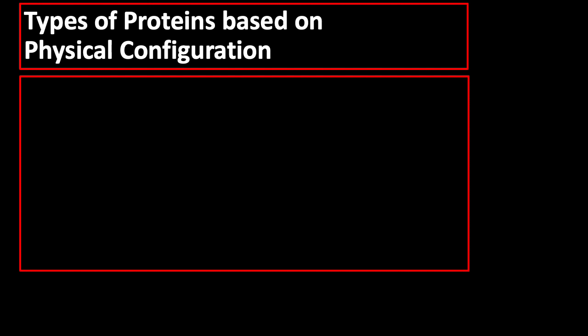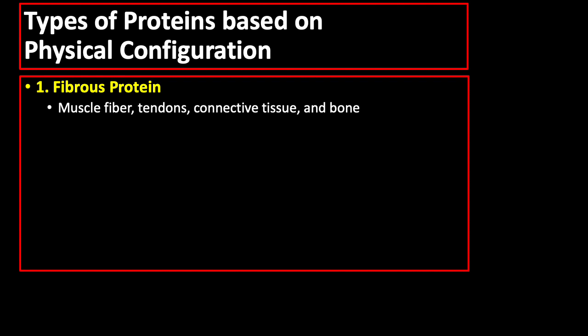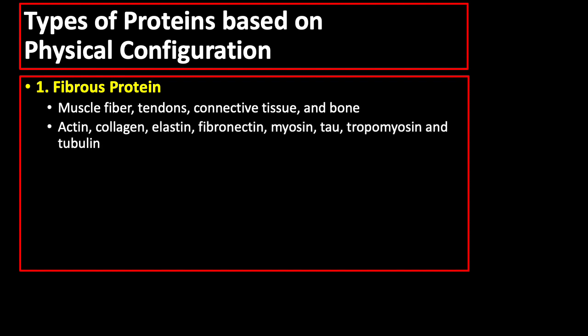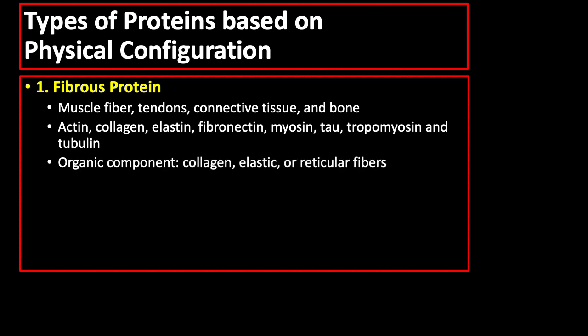There are also types of proteins based on physical configuration: fibrous, globular, and membrane proteins. Fibrous proteins form muscle fiber, tendons, connective tissue, and bone. Examples of fibrous proteins are actin, collagen, elastin, fibronectin, myosin, tau, tropomyosin, and tubulin. The organic portion of protein fibers found in connective tissues are either collagen, elastic, or reticular fibers.